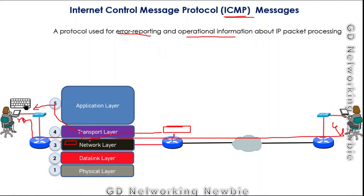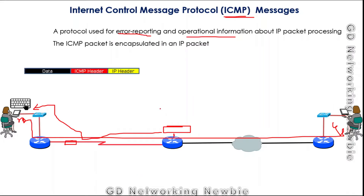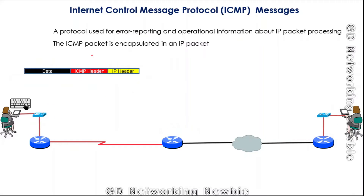The ICMP packet itself is encapsulated within an IP packet. We have the IP header, then the ICMP header, and then the rest of the data. The IP packet is the big container and the ICMP packet is placed inside it — that is the encapsulation of the ICMP packet.